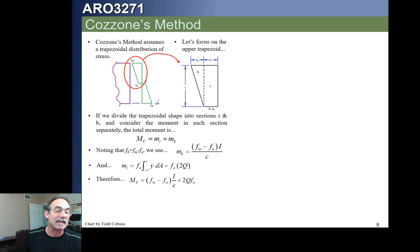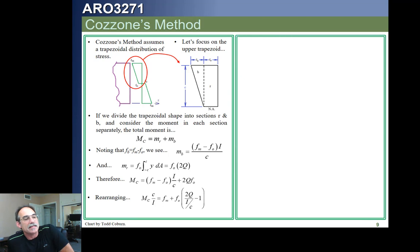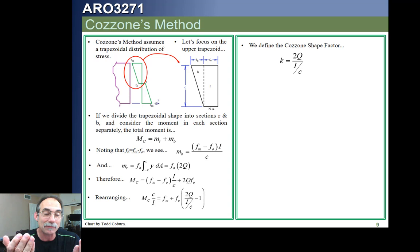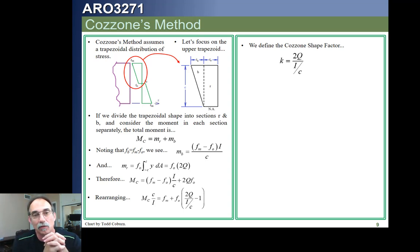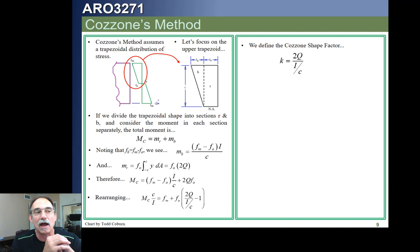We're not going to calculate the moment exactly like this directly. If we take the value 2Q over (I over C), we're going to introduce that as the Cozzone shape factor. Remember last lecture we introduced the plastic bending shape factor, which is the ratio of the plastic bending allowable to the elastic bending allowable. This is a different shape factor — analogous, but not the same. The Cozzone section shape factor is 2Q over (I/C). It's a geometric property and a measure of how much plastic capability we have.